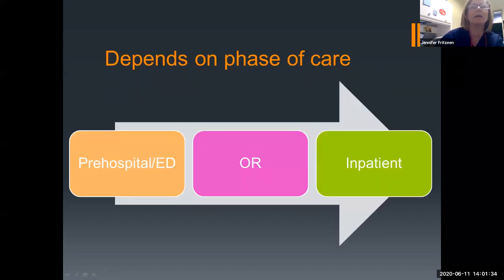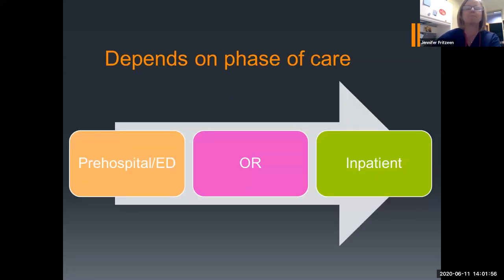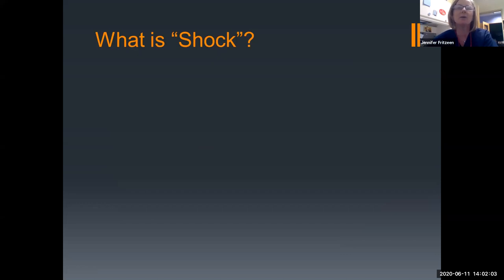A lot of that is really going to depend on the phase of care they're in. When you're in the emergency department, neurogenic shock and hemorrhagic shock are what we're going to focus on. In the OR, a lot more hemorrhagic shock as they're losing blood. On the inpatient side, we're really going to see a lot more distributive shock, maybe potential sepsis, as well as hypovolemic shock and neurogenic shock. So it goes across the spectrum of care. This is going to be a basic lecture to lay our groundwork as we get more in-depth in future lectures.